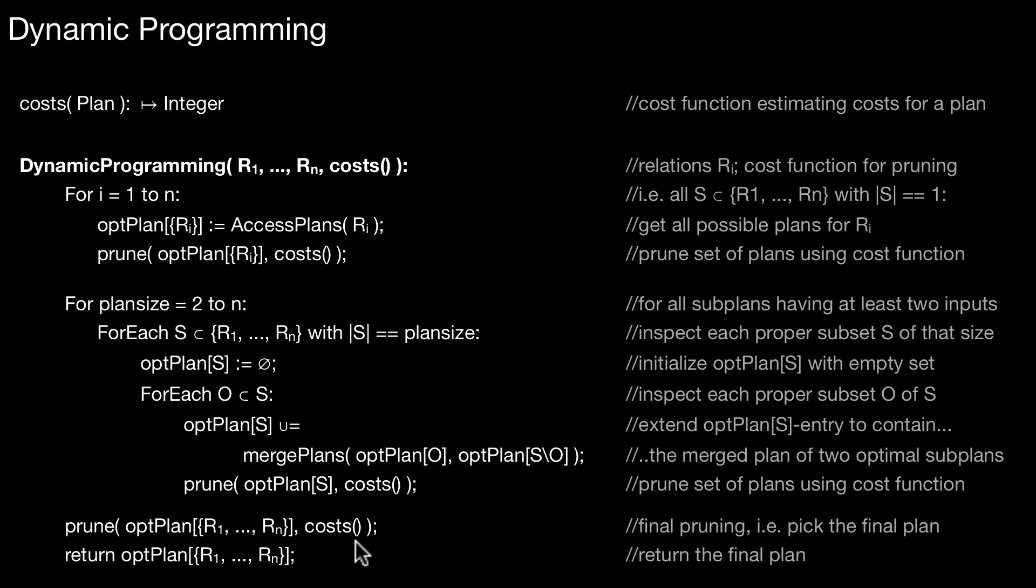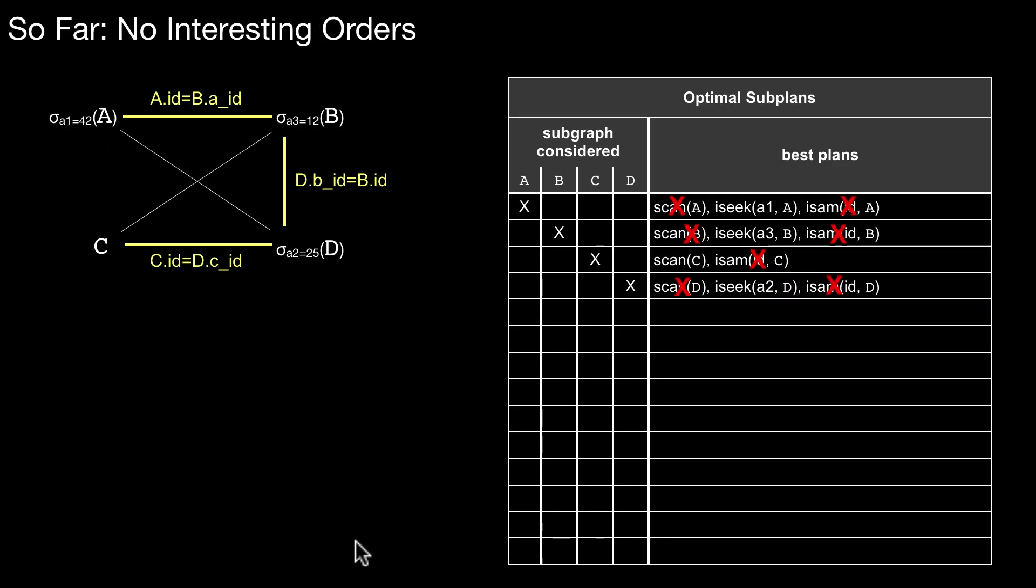So two things to be aware of, in the context of database systems, are the following optimizations. One is interesting orders. What is an interesting order?